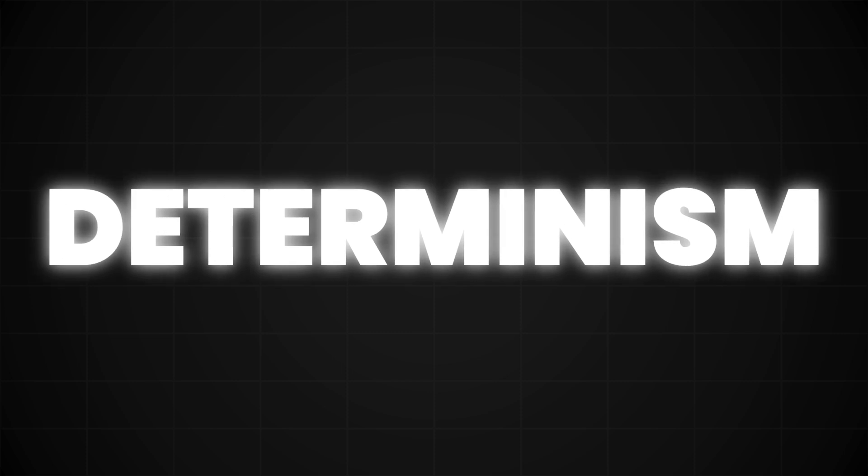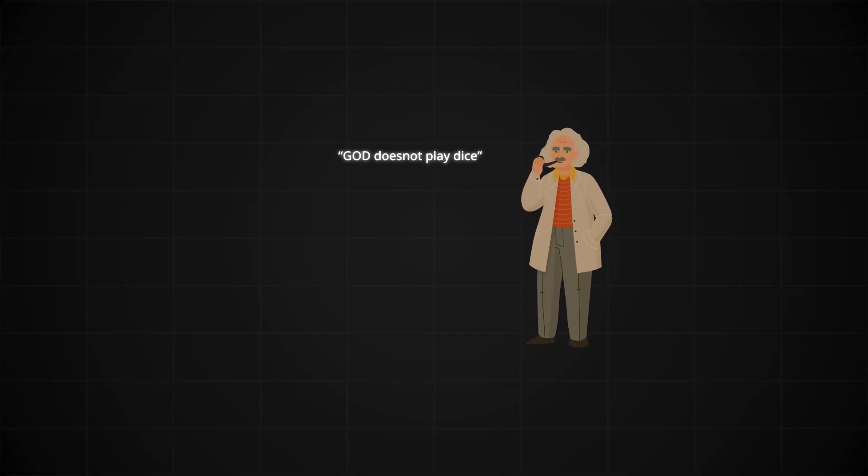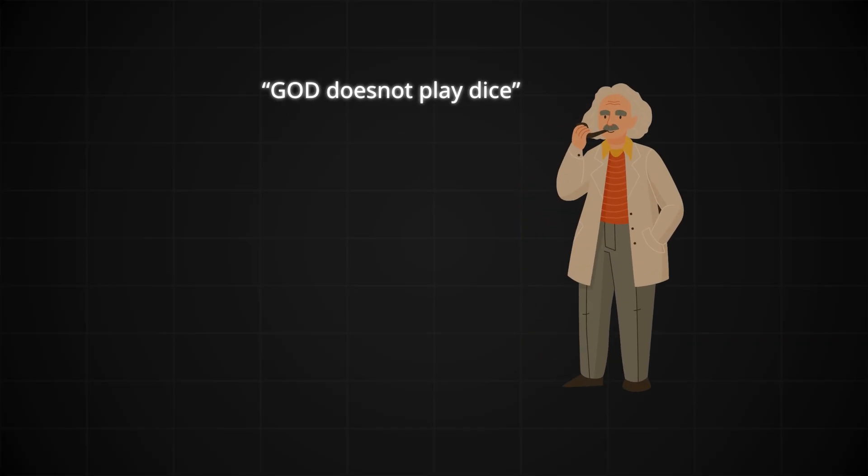But that tiny detail ended up introducing probability into the very foundation of our understanding of reality. The universe was no longer deterministic. This deeply unsettled many scientists, including Einstein, who famously resisted the idea.